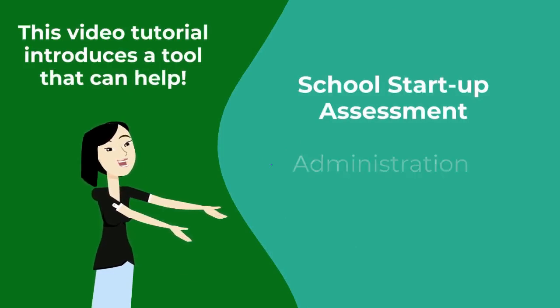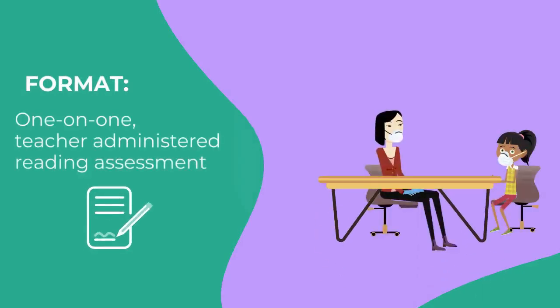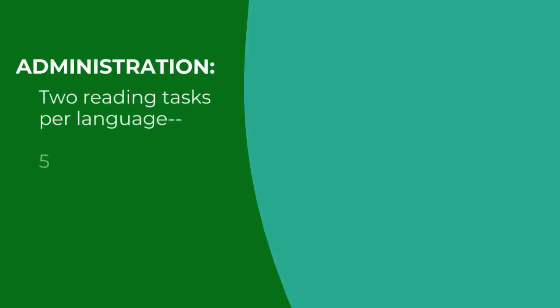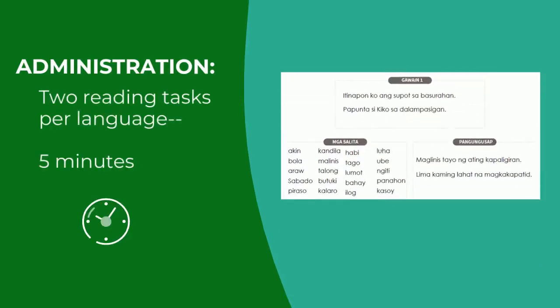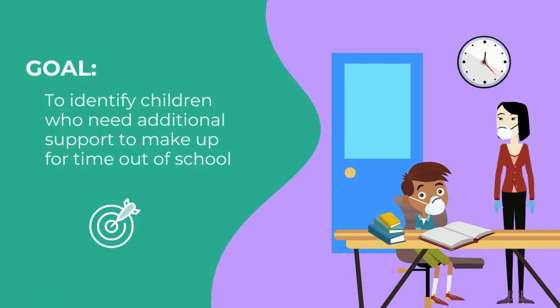The video will explain how the assessment is administered and how to determine a child's reading profile. The assessment is administered by a teacher, and learners are tested individually. Assessment items are based on the end-of-year standards from the previous grade level. During the assessment, the child is asked to complete two reading tasks, which takes about five minutes per language. The goal is to help teachers identify children in need of additional support and understand how much is needed.